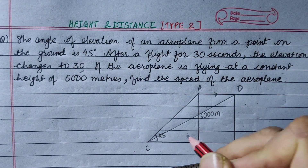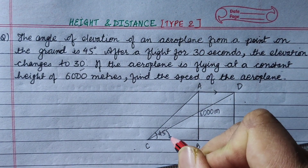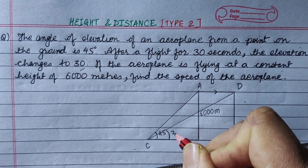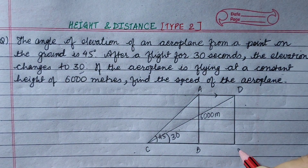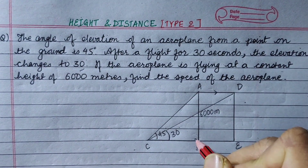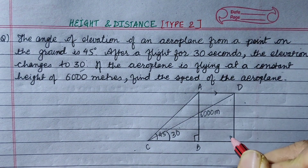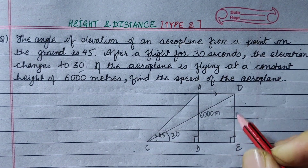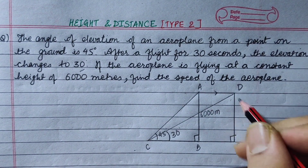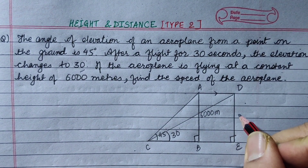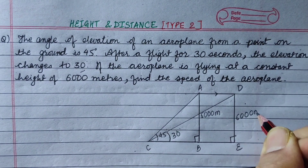Now the second angle of elevation is 30 degrees. This is 90 degrees here and 90 degrees there. And this height is 6,000 meters.